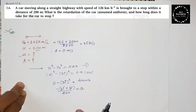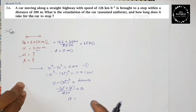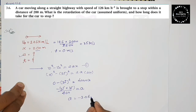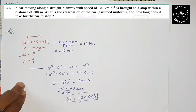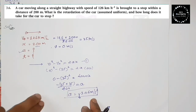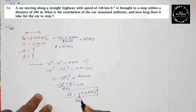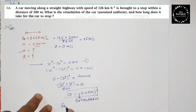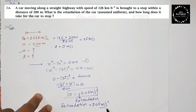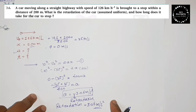Pause your video and do the calculation. You should get the answer for a. Due to the minus sign, a equals minus 3.06 meters per second squared. The minus sign represents retardation. So, the retardation is equal to 3.06 meters per second squared. Never forget to write the unit, otherwise marks will be deducted.